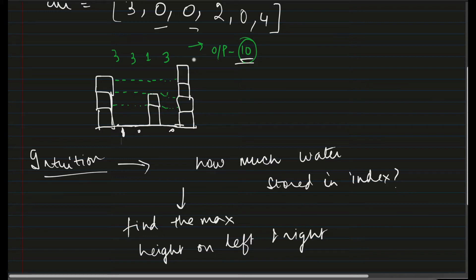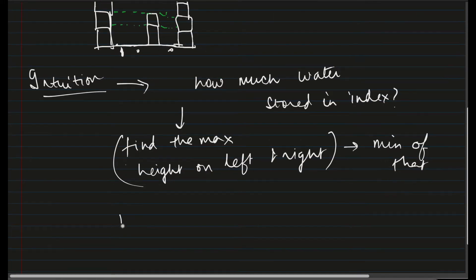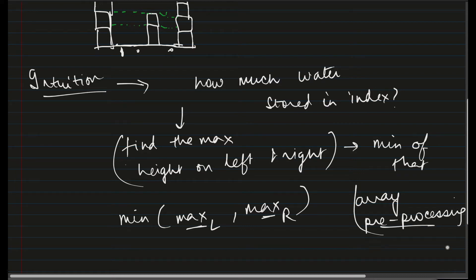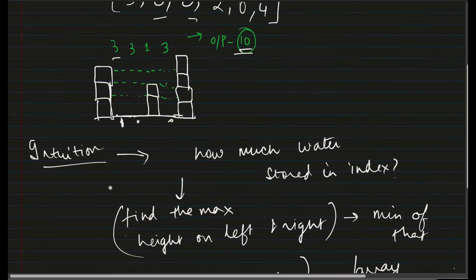What is the minimum of these two? 3 or 4? 3. And the amount of water stored in this index is also 3. So what do we conclude from here? Find the maximum height on left and right. And from here, take the minimum of that. Means minimum of the max height on left and the max height on right, which also means we have to do some kind of array preprocessing to find out what is the maximum height of the block on the left hand side and what is the maximum height of the block on the right hand side. But is that it? Let's figure out.